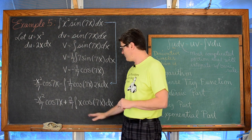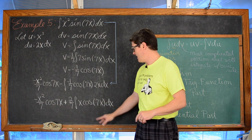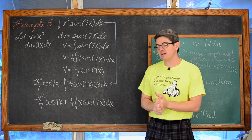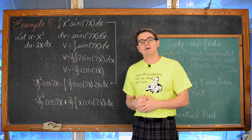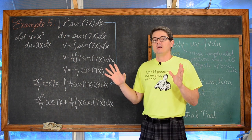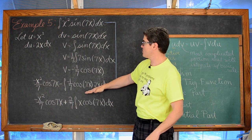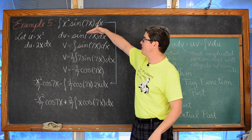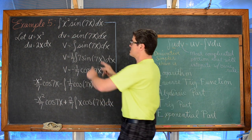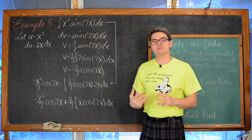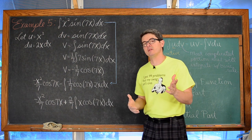We re-identify: let u equal x, so du is simply dx, and let dv equal cosine of 7x dx. We integrate dv — using the chain rule with derivative of 7x equal to 7, introducing a multiplication of 7 and balancing with 1/7 — the integral of cosine is sine, so v equals 1/7 sine of 7x.